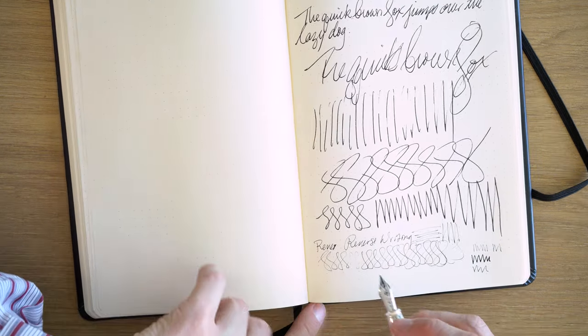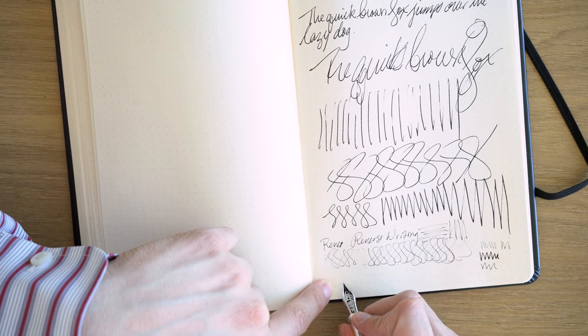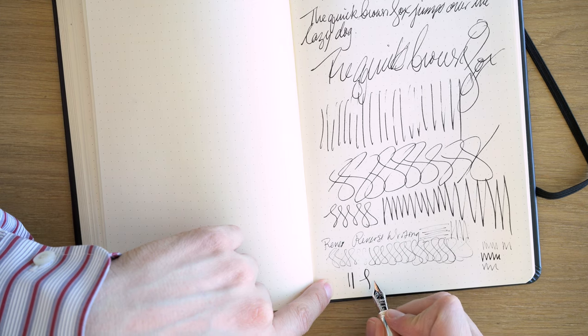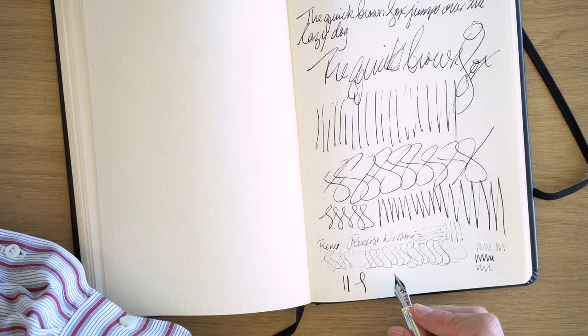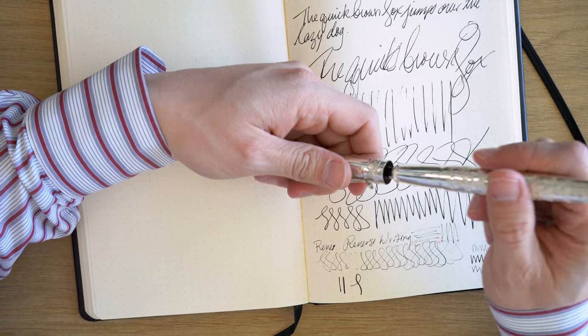Now in terms of flexibility, this nib isn't really flexible. You can, it's 18 karat gold so you can get a little bit out of it, but I wouldn't, I really wouldn't push it. I don't push on this nib to try to get any line variation, it's just not really designed for that. Okay, so that's the writing sample.